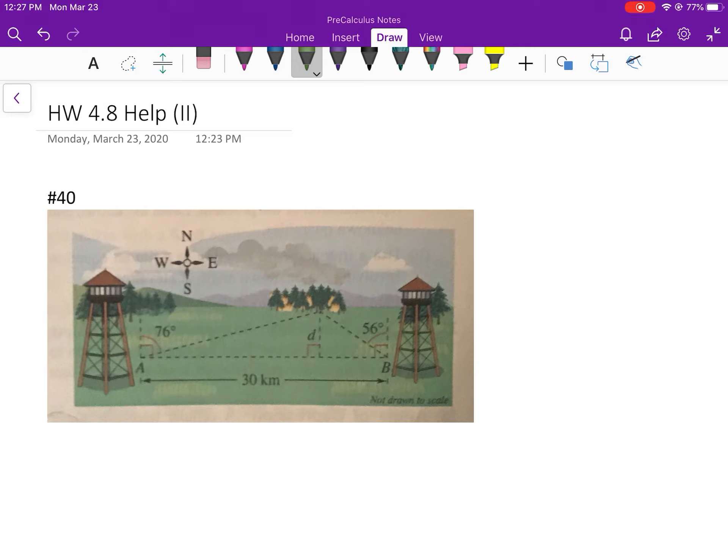So once you read the directions in the book you're going to see this picture and basically you just want to know the distance D from segment AB to the fire. They've given you the picture so we're just going to add a few details to it.